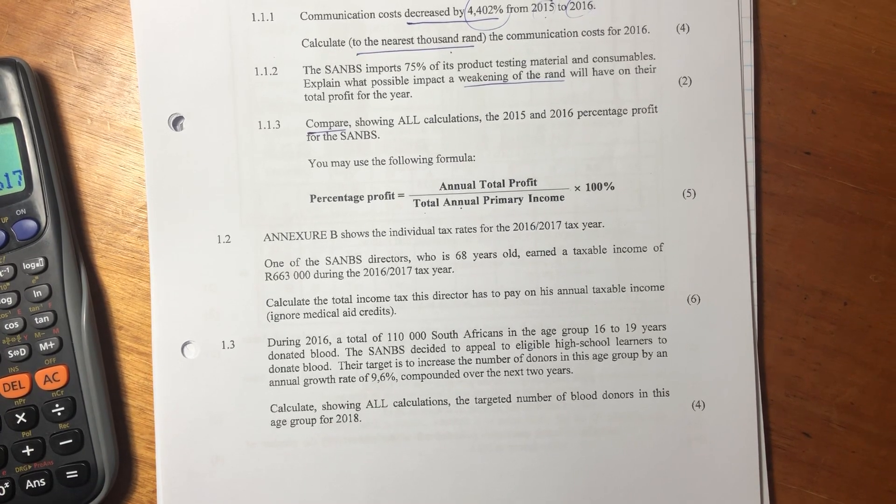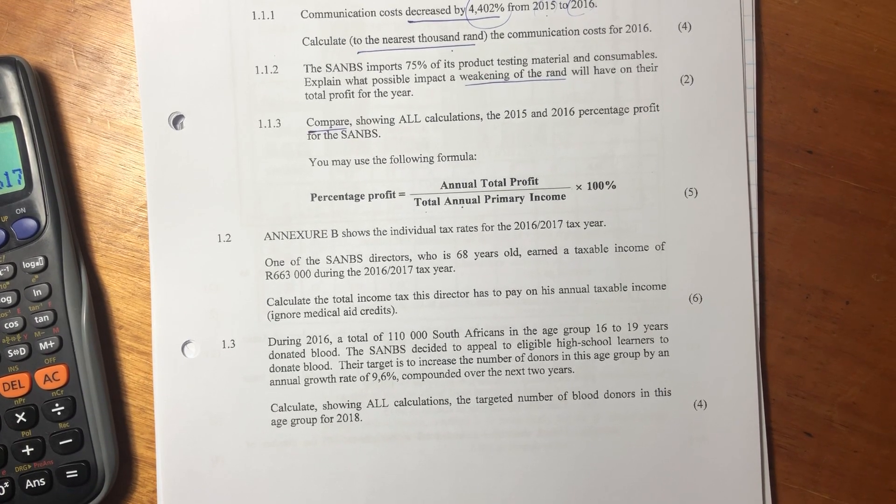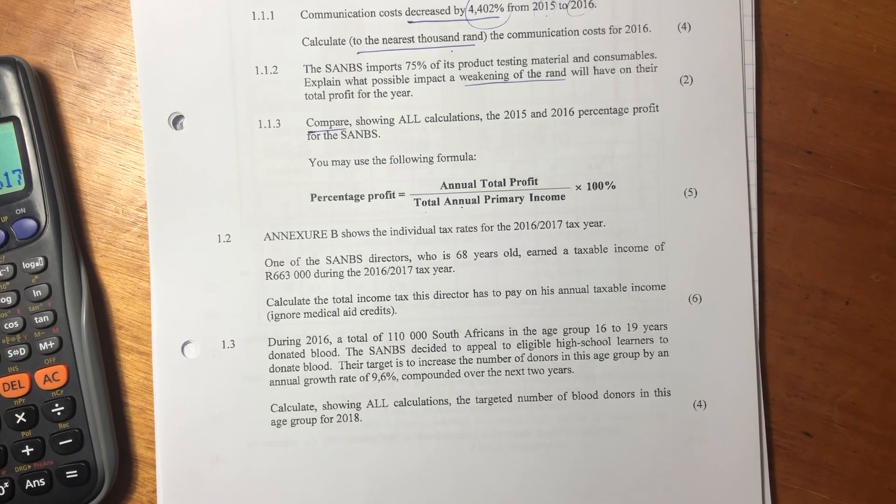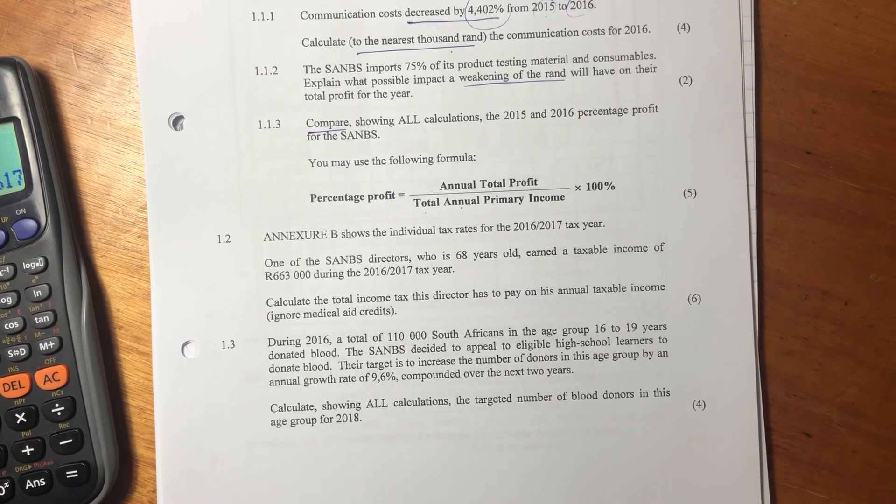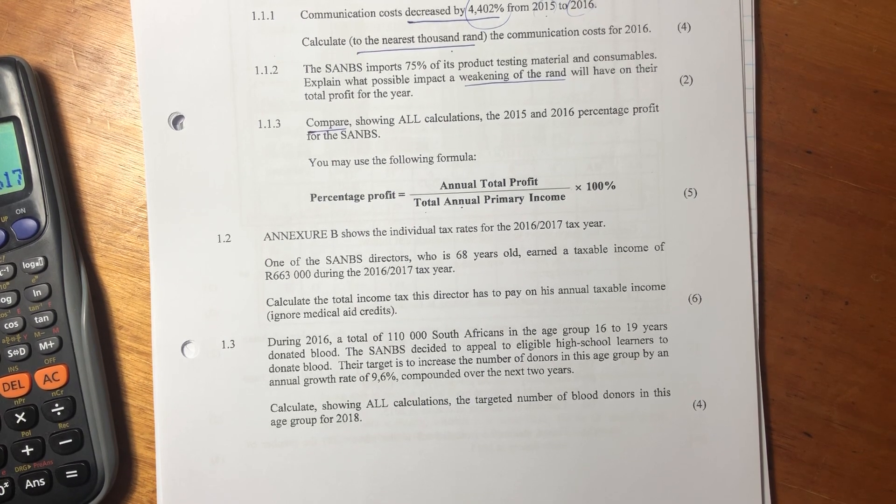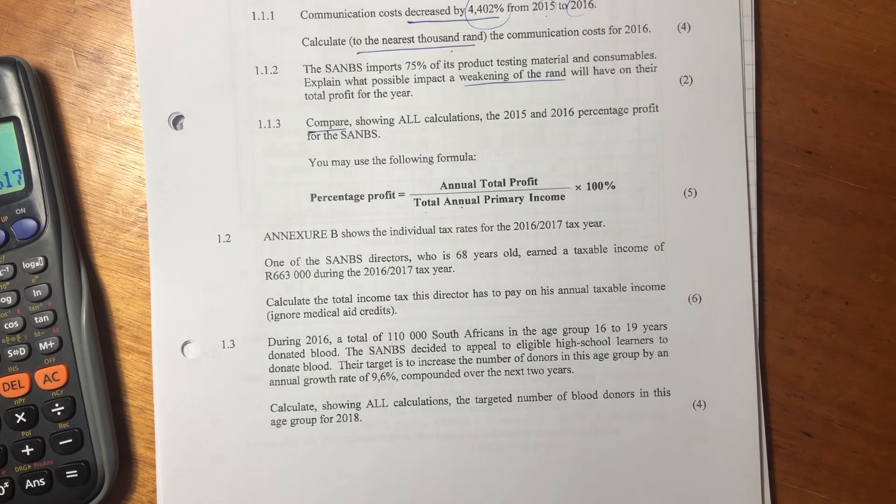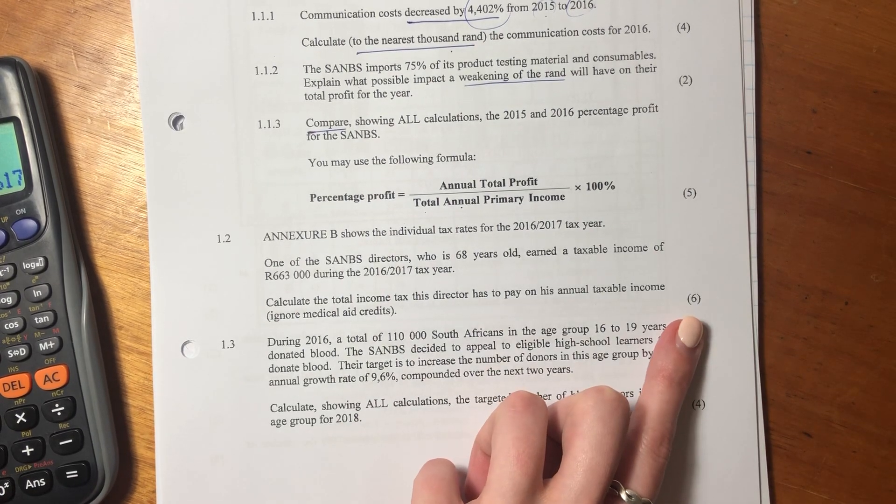Okay, we are now going to look at 1.2. So it says, Annex B shows the individual tax rates for the 2016 and 2017 tax year. So we know automatically this is going to be a tax question. Students often battle with these questions, but these are great questions to practice because they're often for quite a lot of marks.